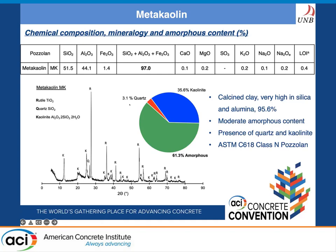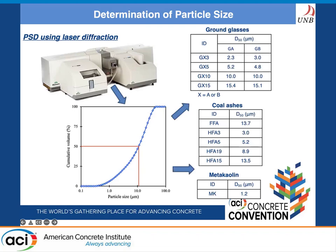Particle size distribution of the pozzolans was determined using laser diffraction. The resulting graphs allow determination of D10, D50, and D90. In this research, we mainly focused on D50 because it gives a good idea of the average particle size, and several research papers have shown D50 is a better measure than particles passing 45 microns. The glasses were ground to four different particle sizes ranging from 2.3 microns to about 15 microns. Similarly, the harvested fly ash was ground from 3 microns to 13.5 microns, while the parent fly ash was kept at its as-received particle size. Metakaolin was already fine and was not ground further.